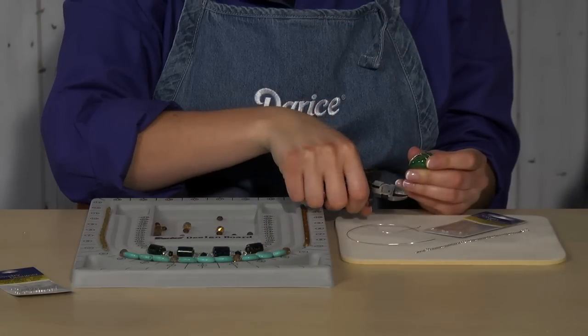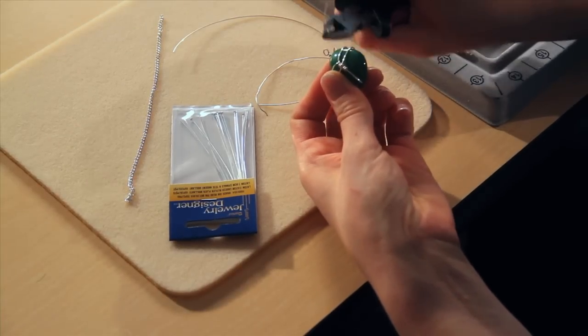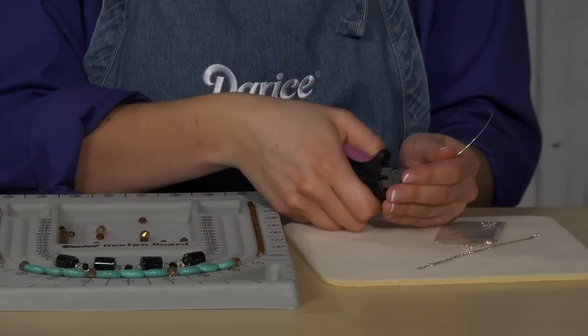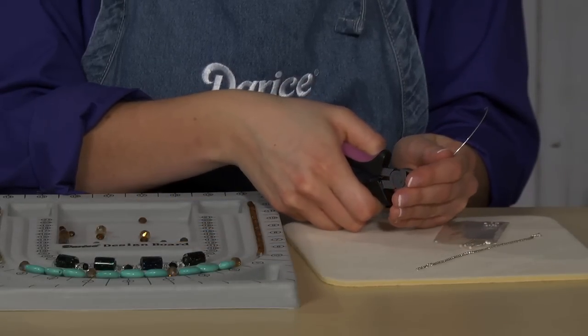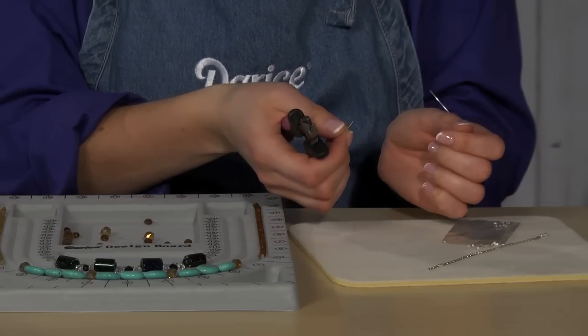When cutting excess wire, place the flat side of the tool as near as you can to the bead. This ensures that you get the closest cut possible. If a cut wire does not come off cleanly, take your free hand and gently wiggle the end of the wire until it separates.